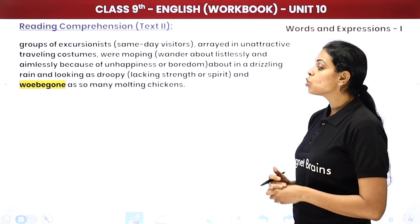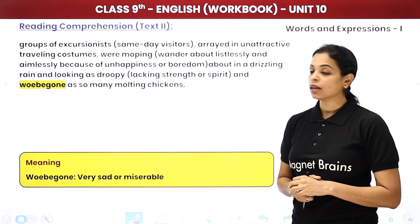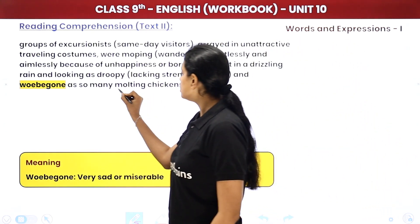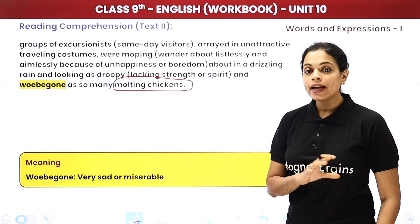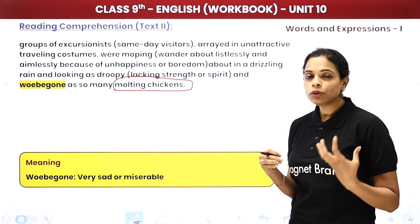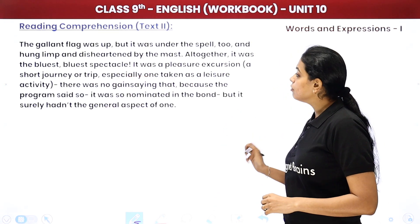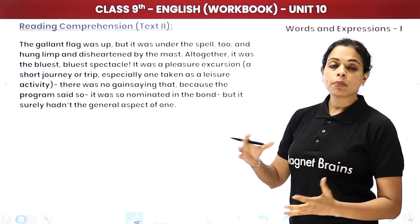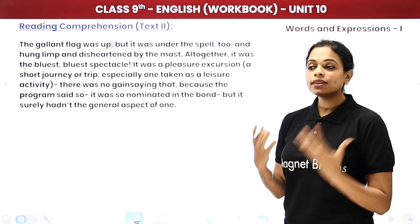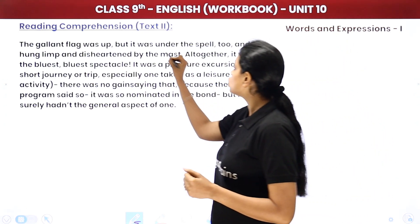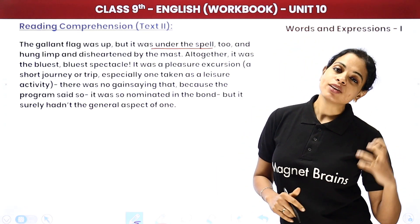They were as sad and miserable as molting chickens — chickens go through a phase when they stop laying eggs and become very gloomy. The gallant flag was up on the ship, but it too was under the spell — it also appeared sad or gloomy, as if under a magic charm. It hung limp and disheartened by the mast — the vertical pole on the ship.